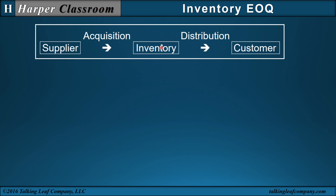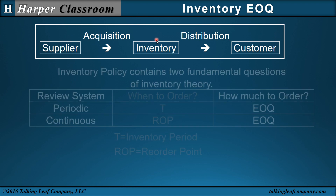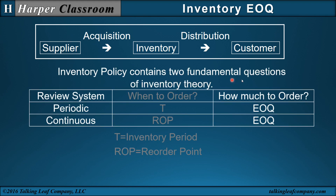The input-output model is that we can increase our inventory by acquiring items from our supplier, and we can decrease inventory by distributing items to the customer. The inventory policy contains the two fundamental questions of inventory theory: when to order, and how much to order. The EOQ is the lot size Q, which corresponds to how much to order for both the periodic and continuous review systems.